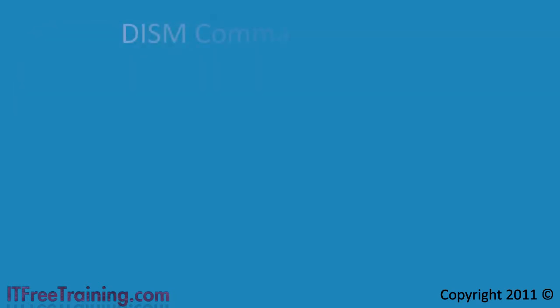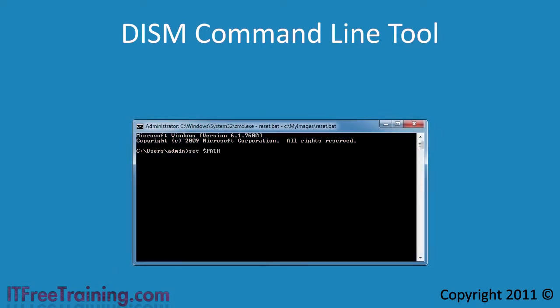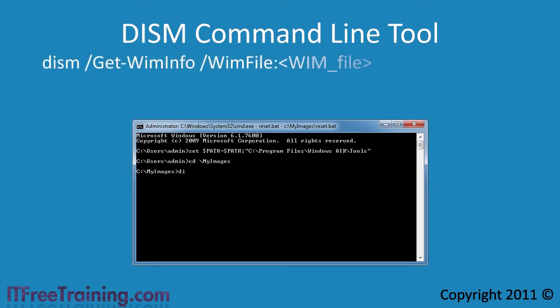Now let's have a look at how to use the DISM command line tool. Before I start using the tool, I am going to add a directory to the environmental variable path. This will make sure that when I run the tool, Windows can find it. If you have the Windows AIK installed on the computer, you can run the deployment tools command prompt from the start menu and this step will be done for you. The first thing I need to do is find out the index number for the image I want to modify. Remember that one WIM file can contain many different images. To do this I run the command DISM with the switch GET-WIMINFO.